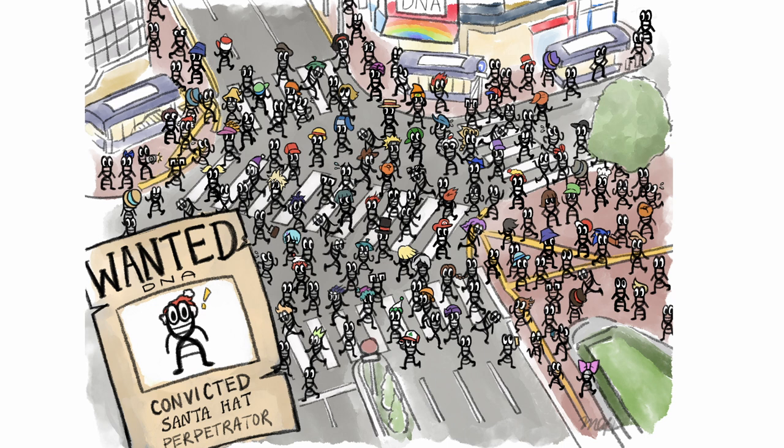Imagine having to look for one individual wearing a Santa hat in the middle of, let's say, Shibuya Crossing — one of the most crowded places on earth — from afar with a pair of binoculars. Then imagine having to wade through the crowd just to pull them out and ask for a DNA sample. Doesn't that sound exhausting? Is there a way that we can accelerate, maybe even automate this process so that we don't go insane trying?